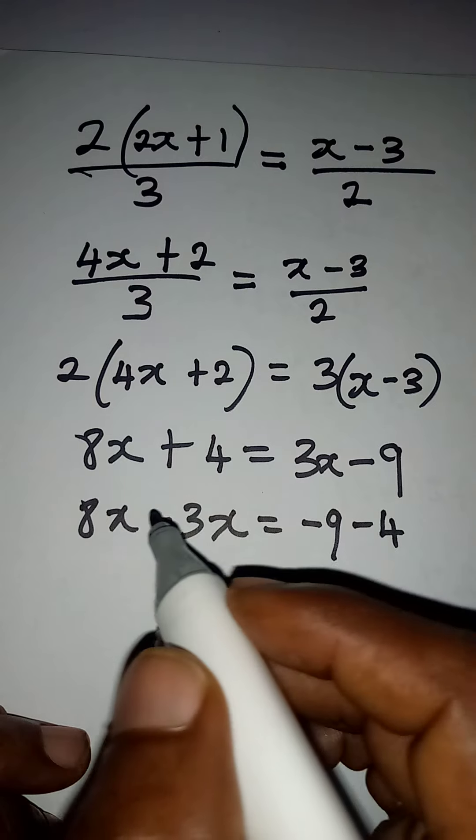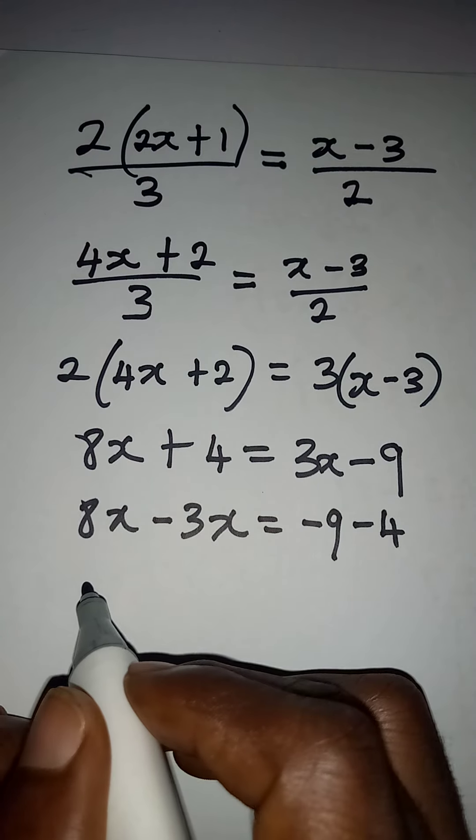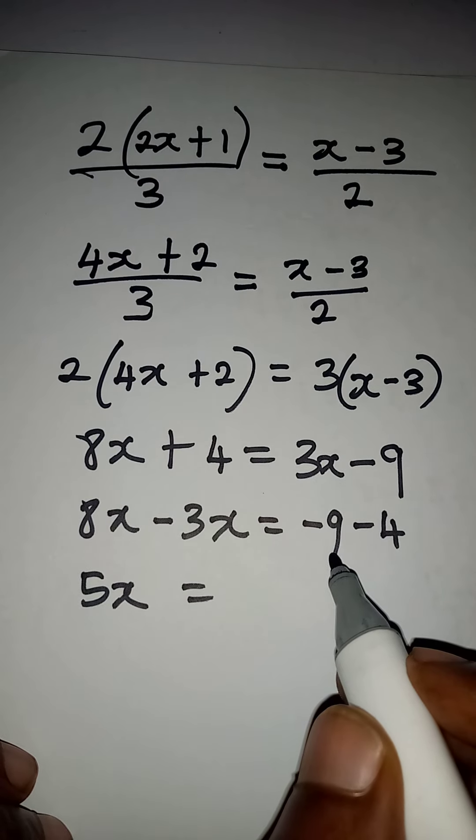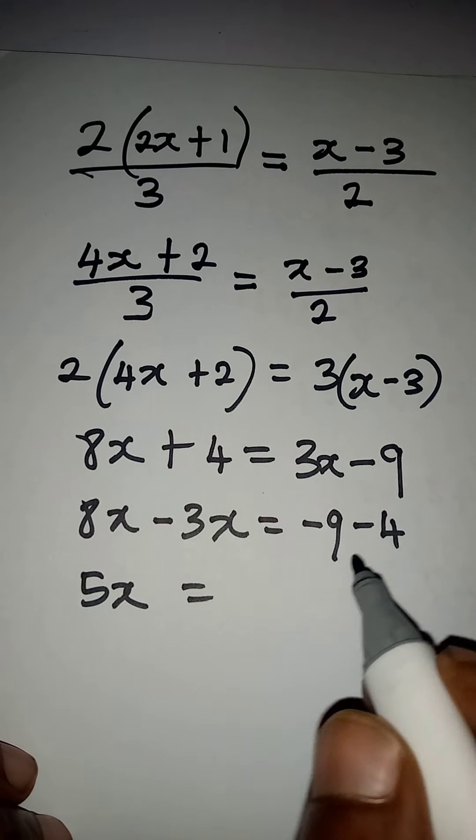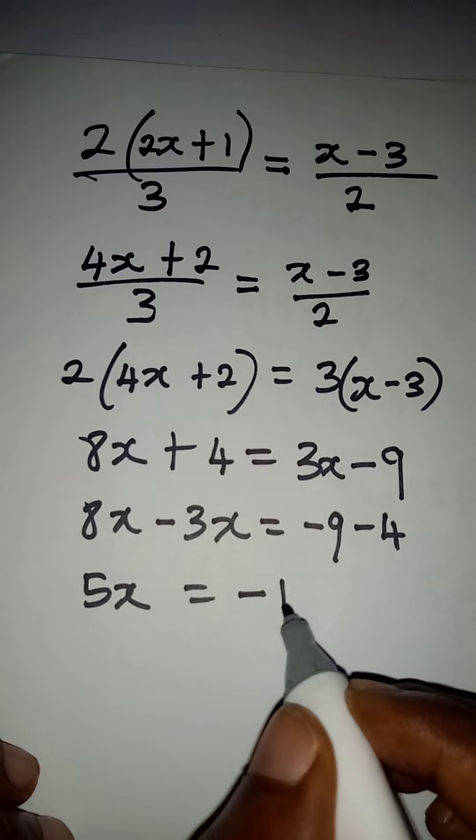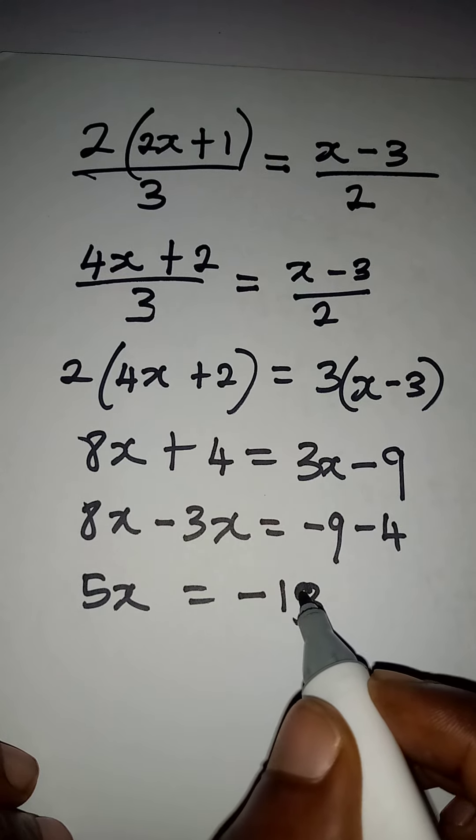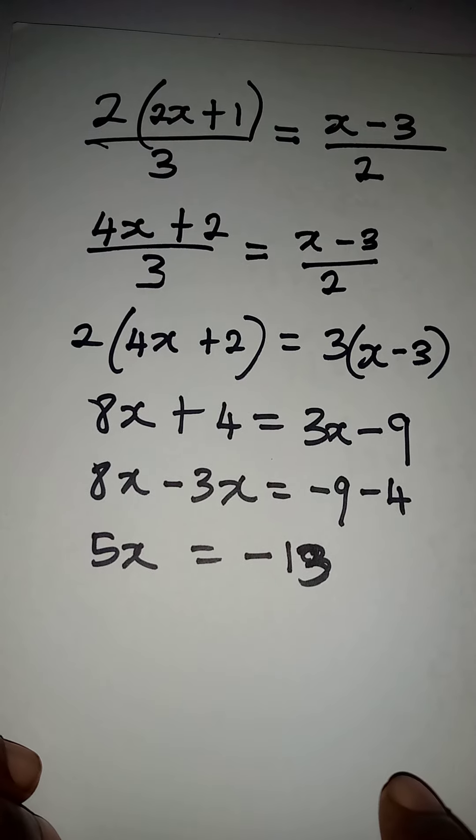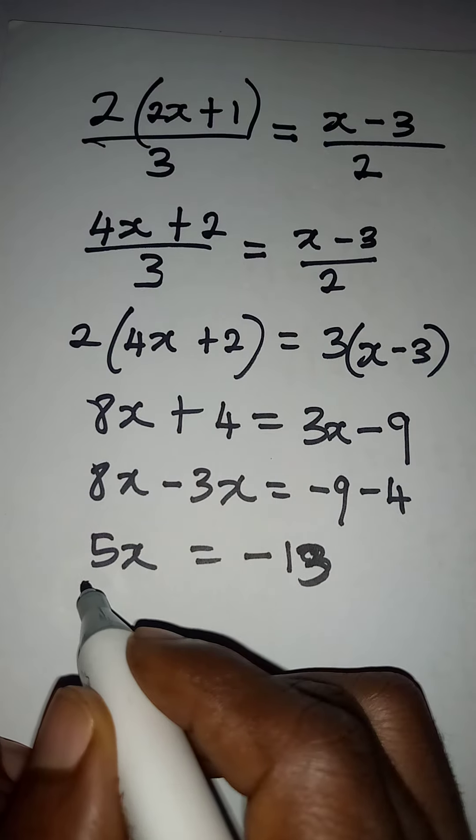8x minus 3x will give us 5x, and this will be equal to minus 9 minus 4, which will give minus 13. Okay, so this will give minus 13. So that when you proceed, you can divide both sides by 5 just to get the value of x.